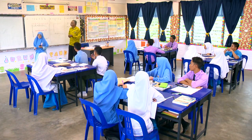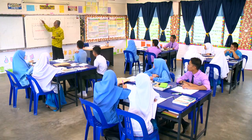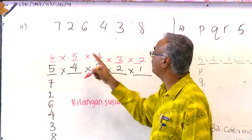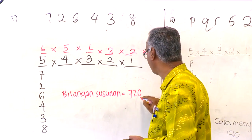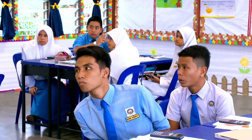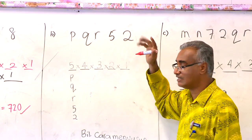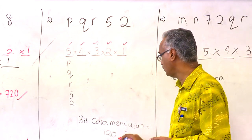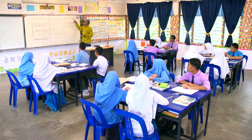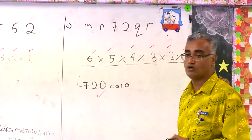Bilangan susunan: 720. Betul tak jawapannya? Cuba kita semak. Sini ada enam digit — ada enam petak kalau guna kaedah pendaraban: 6 × 5 × 4 × 3 × 2 × 1. Bilangan susunan = 720. Yang B pula ada lima — tiga huruf dan dua digit, semuanya lima. 5 × 4 × 3 × 2 × 1 = 120. C pula ada enam: 6 × 5 × 4 × 3 × 2 × 1 = 720.